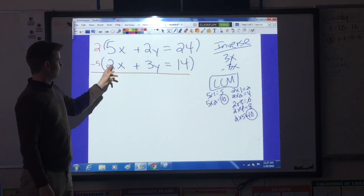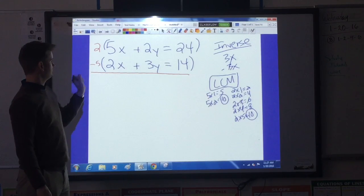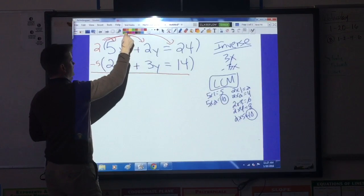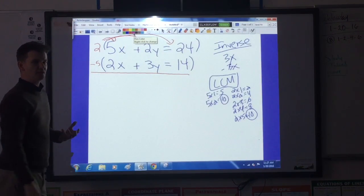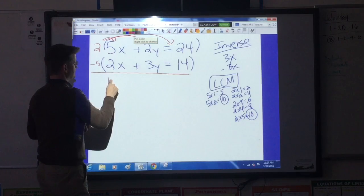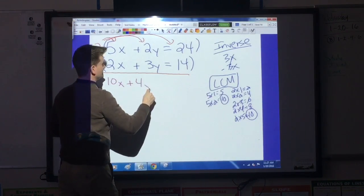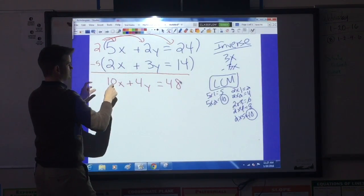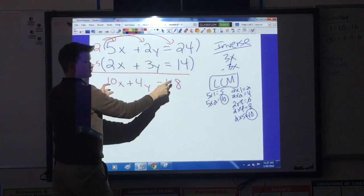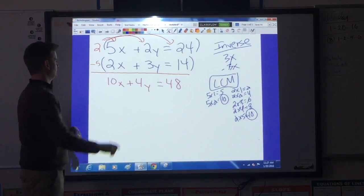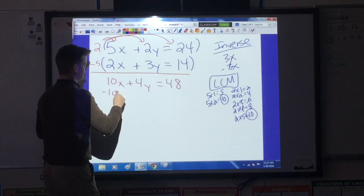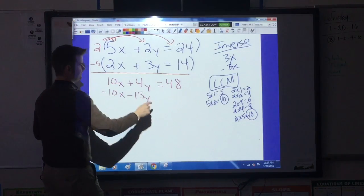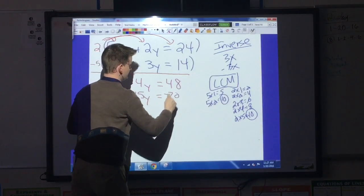Remember, when you're doing this, you must multiply every single term in the equation by the integer you've chosen. 2 will be multiplied into 5x, 2y and 24. Same thing happens on the bottom. Let's do that multiplication now. 2 times 5x is 10x, 2 times 2y is 4y, 2 times 24 is 48. Now I'll multiply the bottom equation. Negative 5 times 2x is negative 10x. Negative 5 times 3y is negative 15y. And negative 5 times 14 is negative 70.